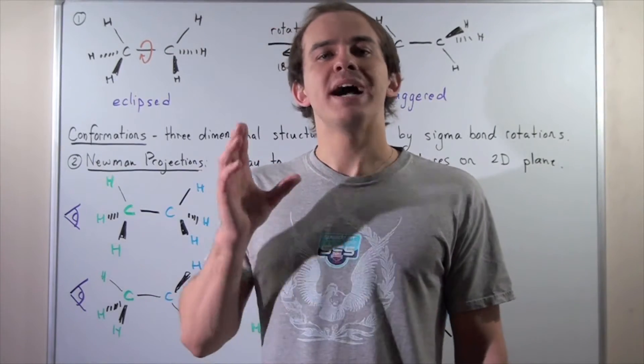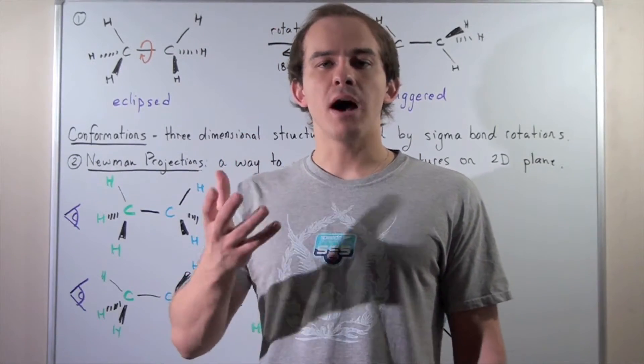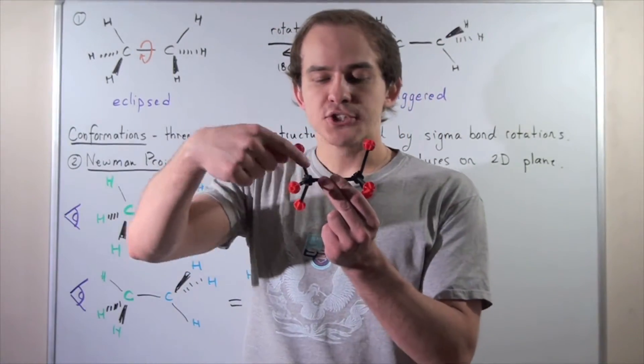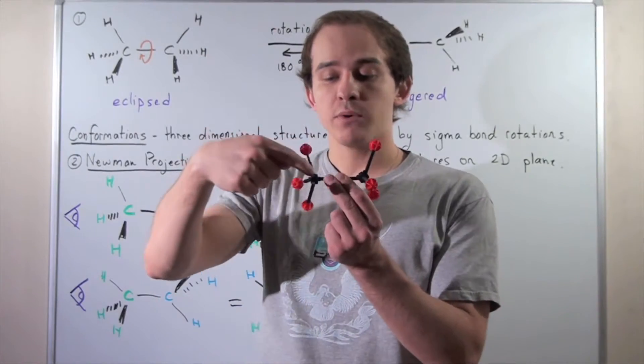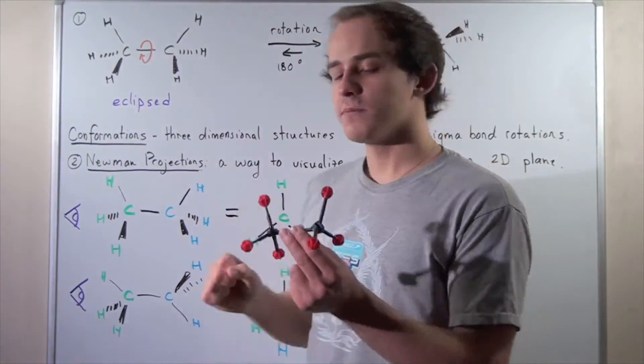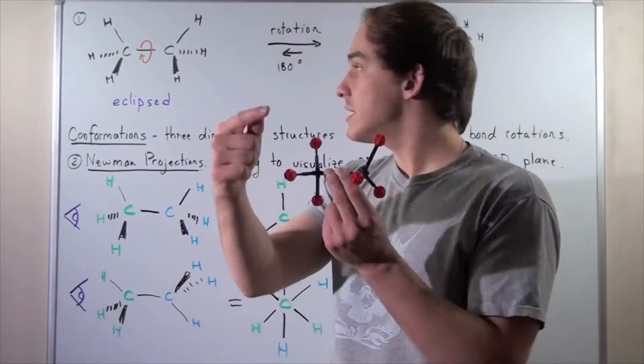Let's begin by examining the three-dimensional picture of our ethane molecule. Ethane looks something like this, where these two black intersections are our carbons—carbon 1 and carbon 2. These red spheres are our hydrogen atoms, so we have six altogether.